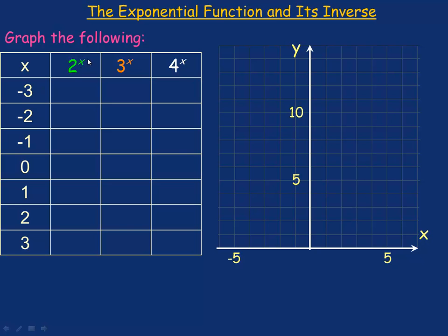We're going to substitute negative 3 in place of x, so we evaluate 2 to the power of negative 3. Remember, the negative exponent means the reciprocal. So that's 1 over 2 cubed, which would be 1 over 8.